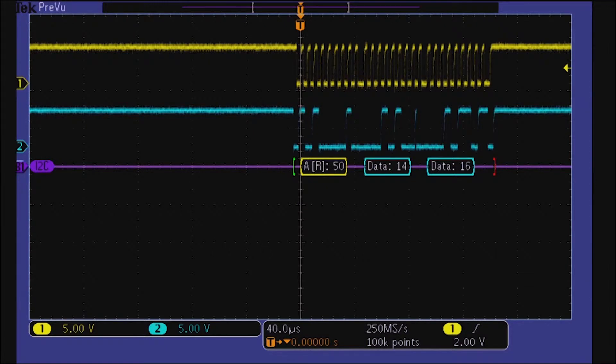On your scope display, you'll see the start of each I2C message, the address from the master device, whether the master wants to read or write data, the data values, and the stop, which indicates the end of each message.